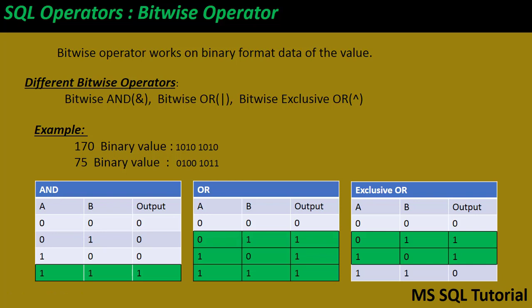I'm taking an example here. If you see on my screen, the value 170 is an integer, and if we convert it to binary the value is 10101010. I also have another integer value, 75. Its binary value is 01001011. Both values consist only of zeros and ones — those are the binary bits.